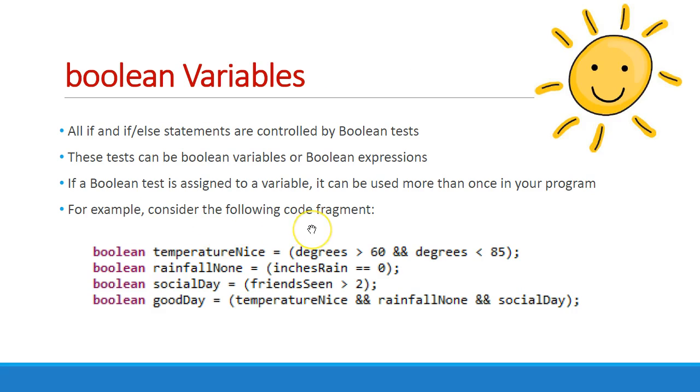Here's some examples of Boolean variables. The temperature is nice if the temperature is above 60 and below 85. We've got the double ampersand doing those checks. Rainfall is none checks whether inches of rain equals zero. Social day is whether friends seen is greater than two. A good day is defined as the temperature is nice and the rainfall is none and social day.